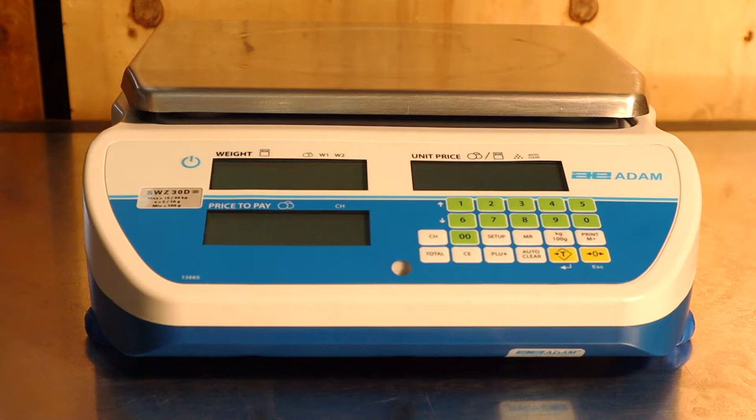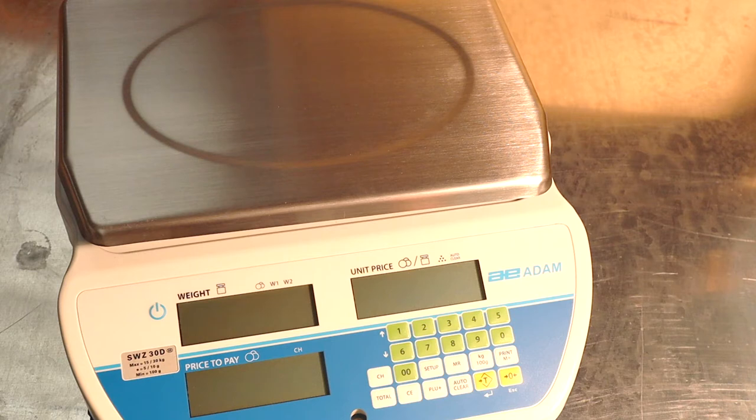RS-232 and optional USB interface means you can send data from the scale to a spreadsheet or printer. The stainless steel pan is ideal when weighing fresh produce.